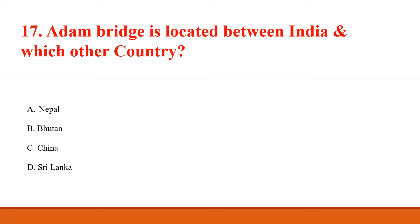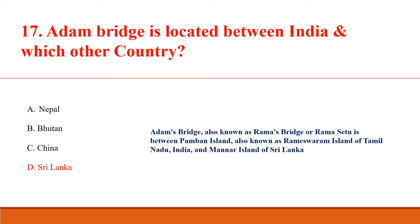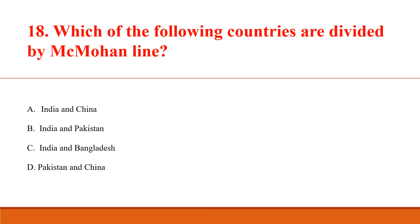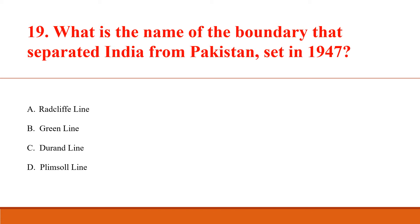Adam's Bridge is located between India and which other country? Answer D: Sri Lanka. Adam's Bridge, also known as Rama Bridge or Ram Setu, is between Pamban Island (also known as Rameshwaram Island) of Tamil Nadu, India, and Mannar Island of Sri Lanka. Which of the following countries are divided by the McMahon Line? Answer A: India and China. What is the name of the boundary that separated India from Pakistan set in 1947? Answer A: Radcliffe Line.